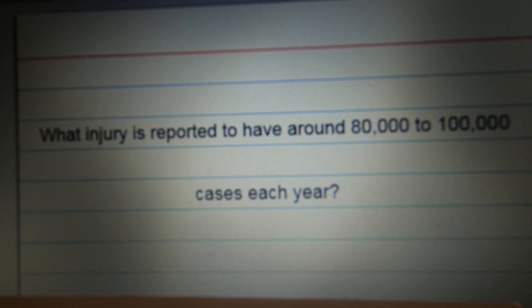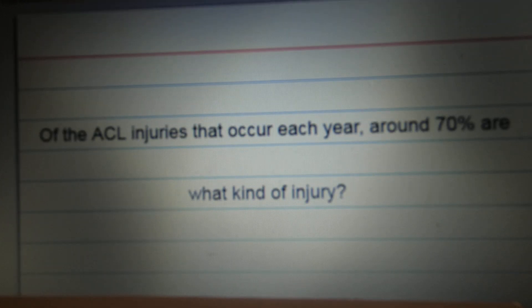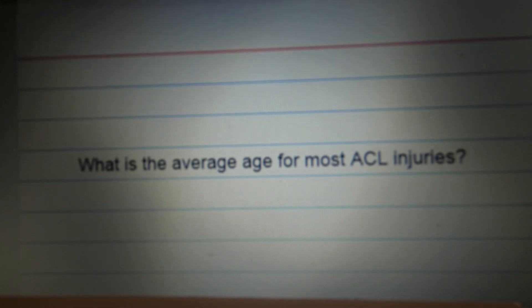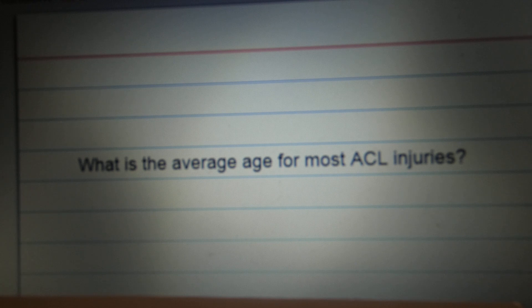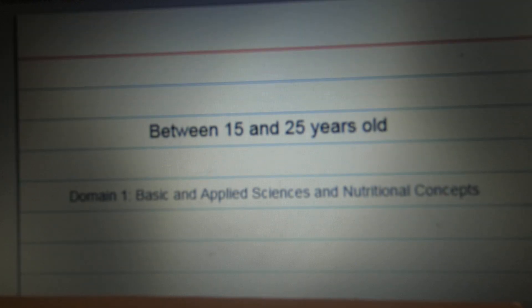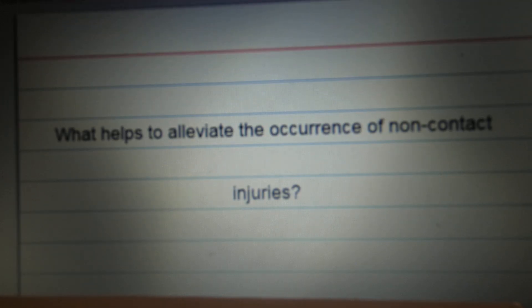What injury is reported to have around 80,000 to 100,000 cases each year? ACL injury. Of the ACL injuries that occur each year around 70%, what kind of injuries? Non-contact injuries. What is the average age for most ACL injuries? Between 15 and 25 years old. What helps to alleviate the occurrence of non-contact injuries? Enhancing neuromuscular stabilization.